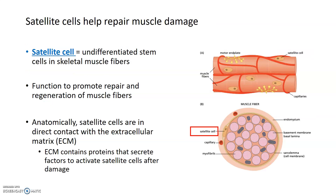The final topic in relation to muscle regeneration and repair is satellite cells. Satellite cells are undifferentiated stem cells that exist in skeletal muscle fibers, and their function is to promote both repair and regeneration of muscle cells. Anatomically, if you look at a cross-section of a muscle fiber, satellite cells actually come into direct contact with the extracellular matrix. Factors from the extracellular matrix are secreted and activate satellite cells after damage.